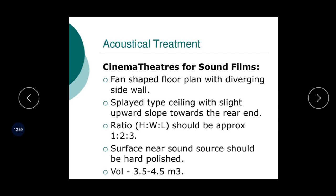One more point I would like to add: the echo impact should be prevented at any cost. If echo is generated, you will lose the feel of the cinema theatre. So your most important point is to prevent echo impact, particularly by avoiding curved surfaces. Diverging side walls have been considered to be the best approach. Try to avoid curved surfaces in the cinema theatre.